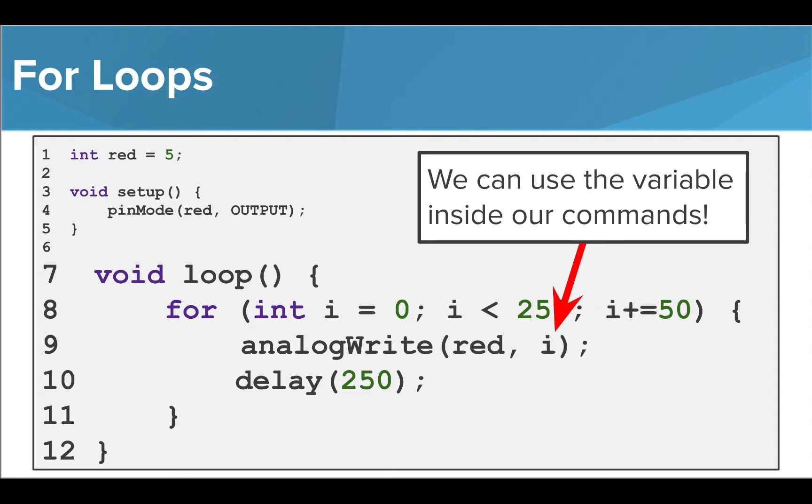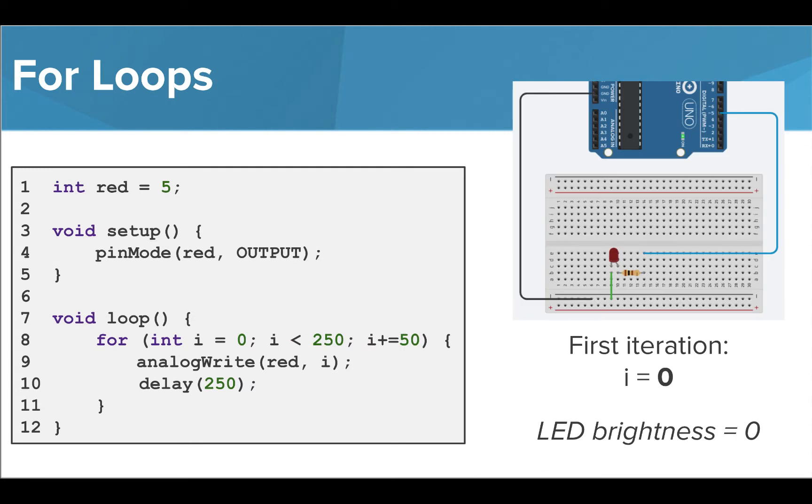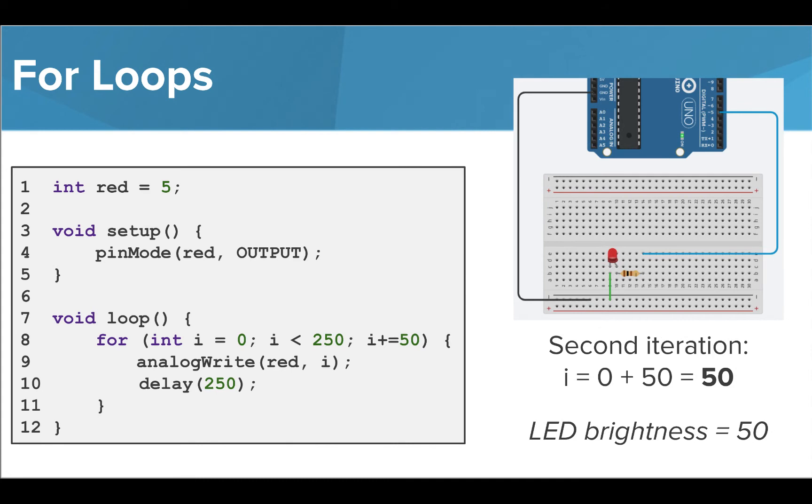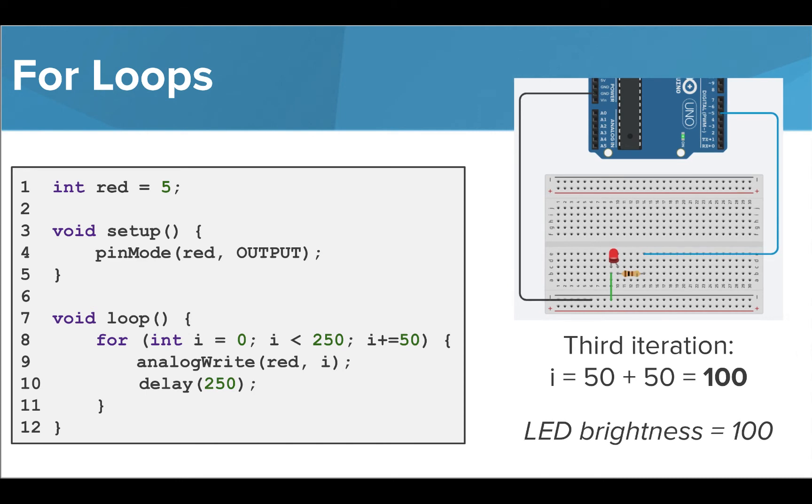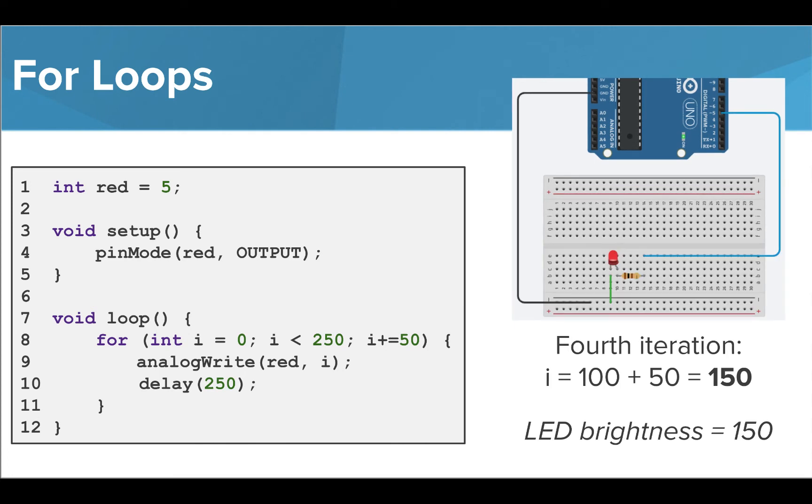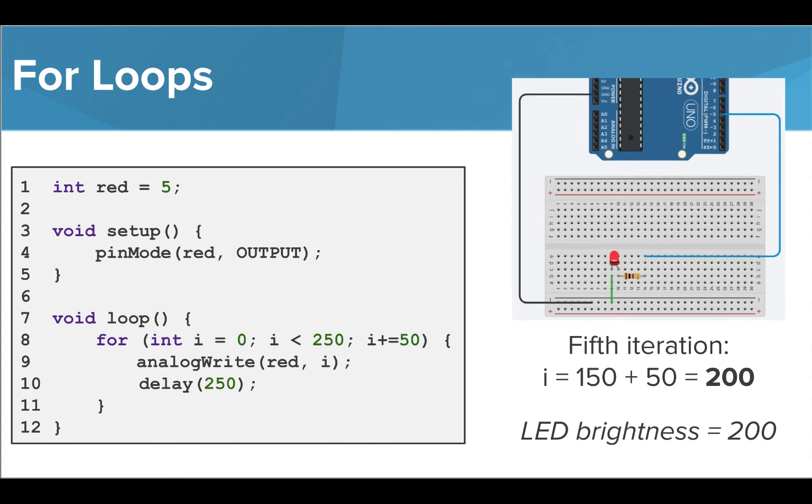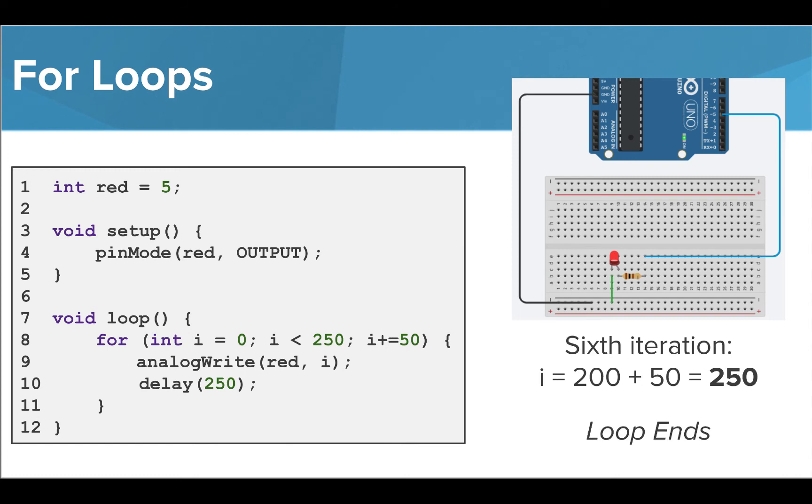Every time the loop runs, the brightness of the red LED is increased. On the first run, i has a value of 0, so the LED is off. i then increases by 50, so it has a value of 50, which is still less than 250, so the code runs and LED is set to a brightness of 50. 50 is added to i again, so it becomes 100. The LED is now set to a brightness of 100. Another 50 is added to i, so it becomes 150, which is still less than 250, so the program runs and the LED is set to a brightness of 150. 50 is again added to i, so it becomes 200. The LED is now set to a brightness of 200. Another 50 is added to i, so it becomes 250, which is not less than 250, so the loop ends. Let's take a look at this in our Tinkercad simulator.